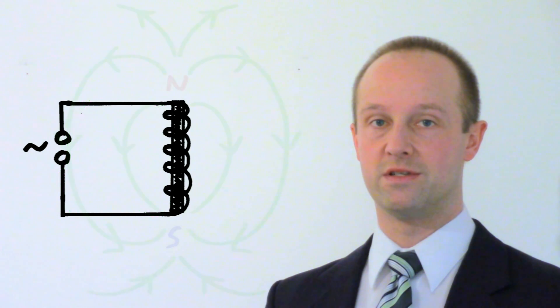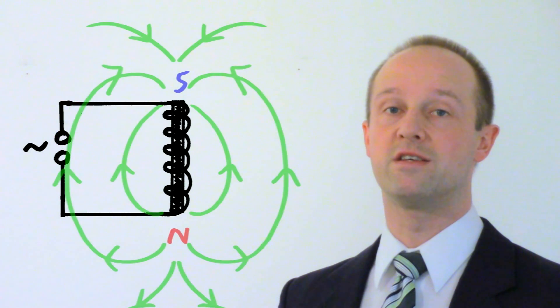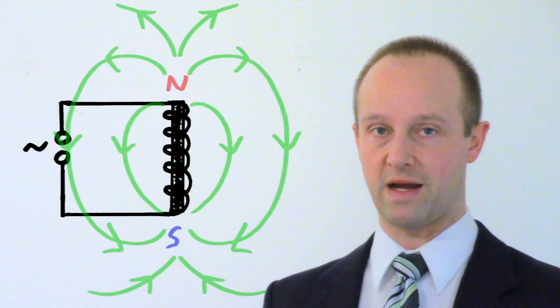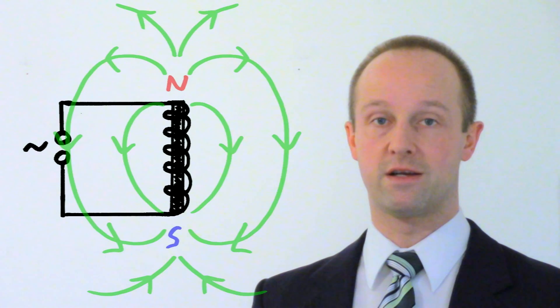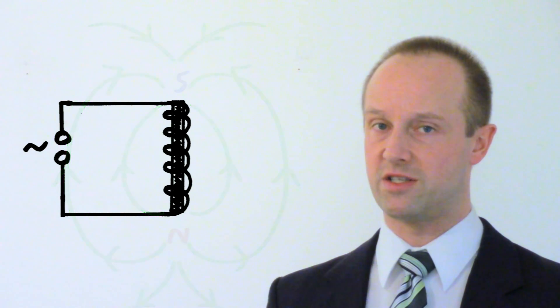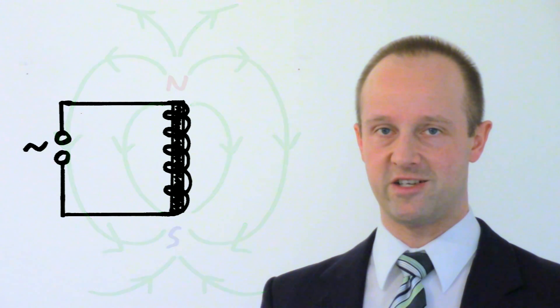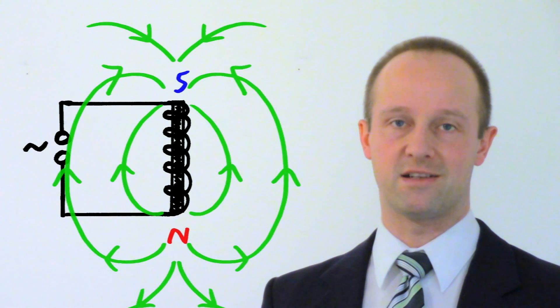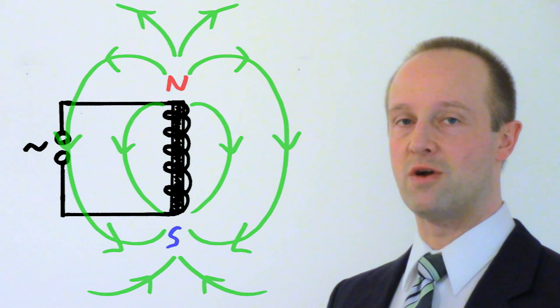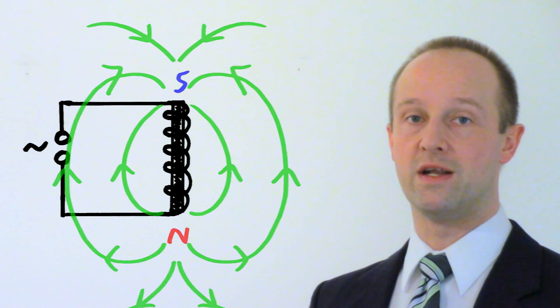As this happens the poles of our magnet flip and they flip in step with this constantly changing current and so we get a constantly changing magnetic field and remember constantly changing magnetic fields are what we need for induction. If you've just got a stationary magnetic field then you don't induce any current at all but a changing magnetic field that's when you can induce some current. So by using an AC supply in our electromagnet we get the constantly changing current we can use for induction.